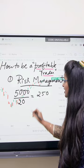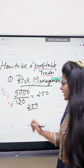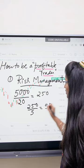Now, how to manage this? 250 is the daily loss limit. Risk Management formula: 250 divided by Stop Loss. If my stop loss is 5 per unit in a trade, I have to take 50 quantities.